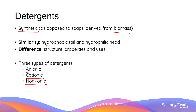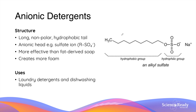The similarity between detergents and soaps is that they both have hydrophobic tails and hydrophilic heads, but they differ in terms of structure, properties, and applications. Anionic detergents consist of a long non-polar hydrophobic tail and a hydrophilic head with a negative charge, hence the name. The most commonly used example has a sulfate ion head. These detergents are much more effective than fat-derived soaps, generating more foam when removing greases. Their typical applications are in laundry detergents and dishwashing liquids.